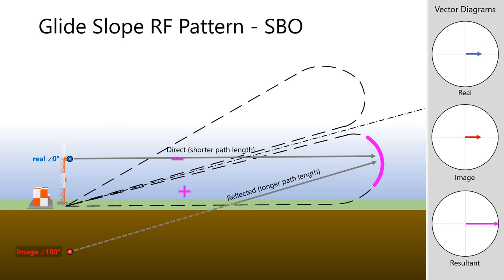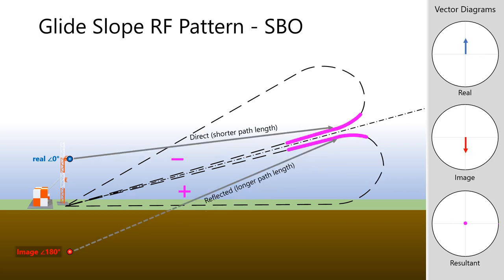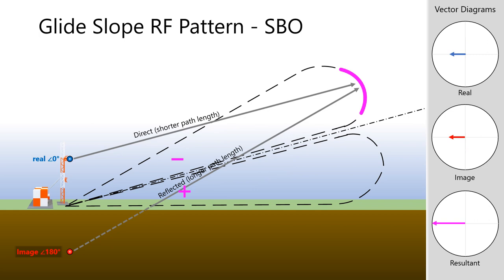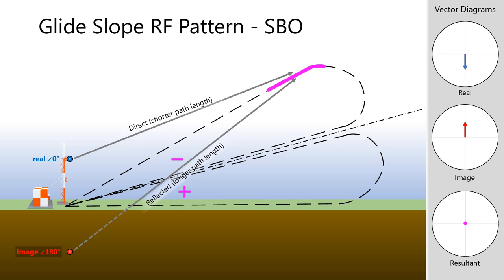Here we see the first null occur where the previously discussed CSB signal was maximum. Again, this is due to the increased height of the SBO antenna. At approximately 4.5 degrees above glide path angle, the RF waves arrive in such a way as to create another signal maximum. At an angle of 6 degrees, a second null occurs. Now, it's important to note that additional nulls and lobes occur above this pattern. However, aircraft flying at those altitudes would not be on a final approach to a runway, and likely not tuned into an ILS at all.